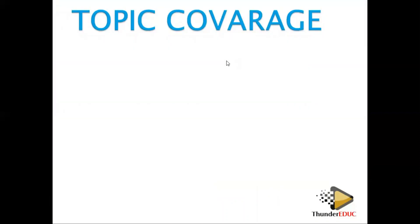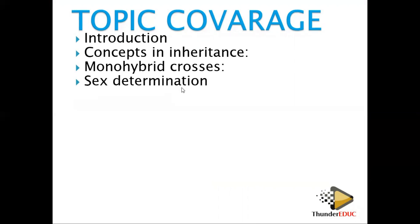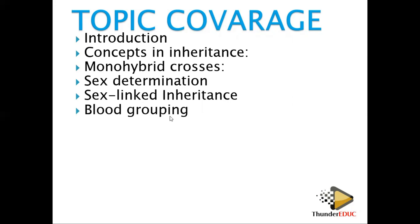In this topic, the subtopics you need to cover are: concepts of inheritance, the terminologies, monohybrid crosses — which involve one character — sex determination, what percentage chance you have of producing a girl or a boy, sex-linked inheritance — characters linked to sex — and blood grouping, including the inheritance of blood groups.